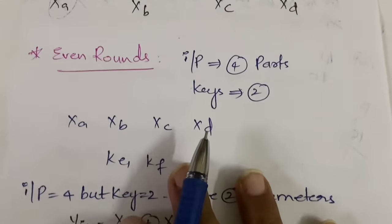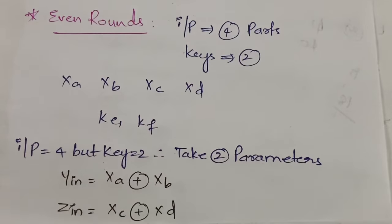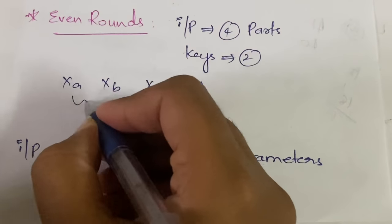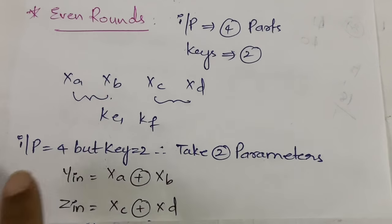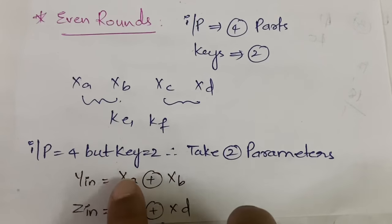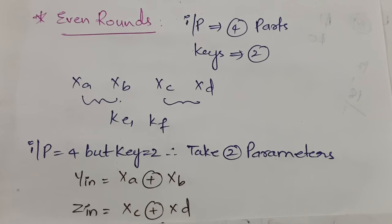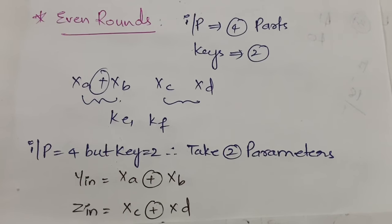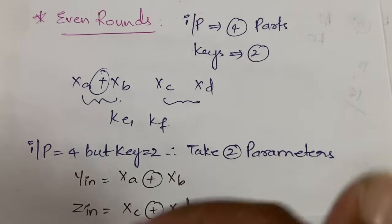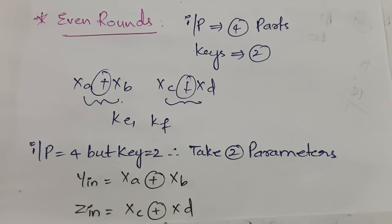In even rounds, you still have four parts of input but only two keys. So you combine the inputs in pairs. You define two parameters: Yin and Zin. Yin equals Xa XOR Xb, and Zin equals Xc XOR Xd. This reduces four inputs to two, matching the two available keys.